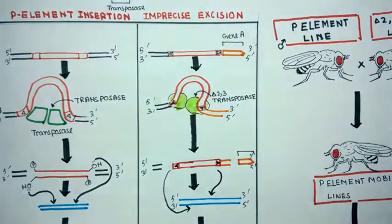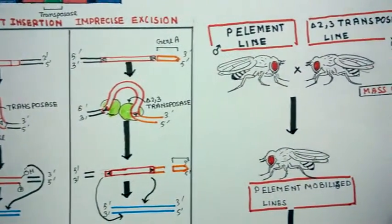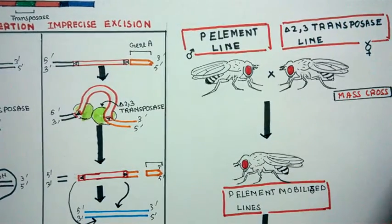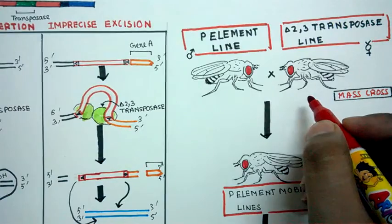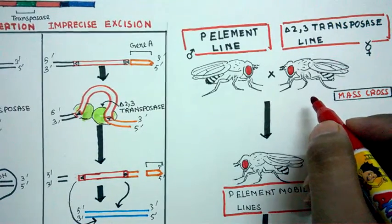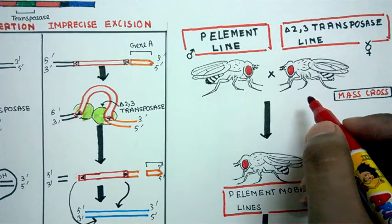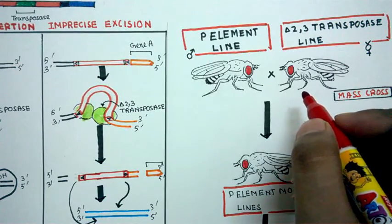Let's jump into a fly cross. Here is our simplistic cross. This cross doesn't represent the real-time scenario, but it's conceptually correct. I would make a video on the detailed cross and how this works. But the basic concept is, one side you have to have a P-element line.